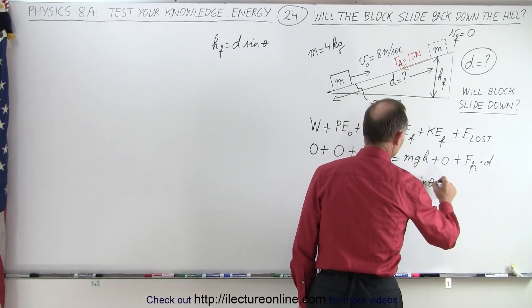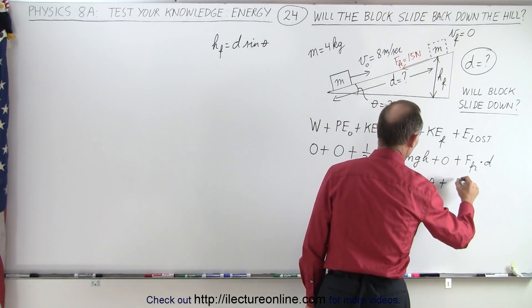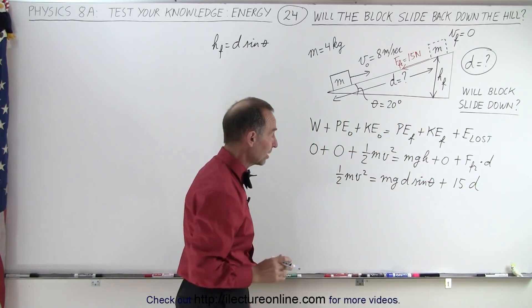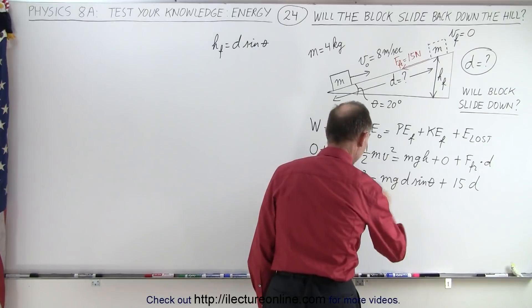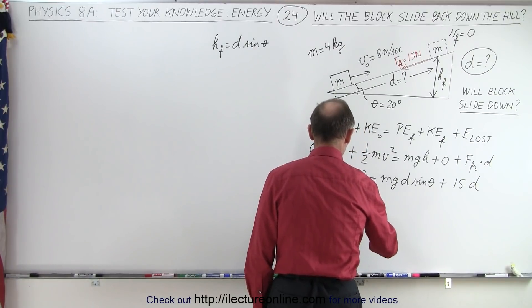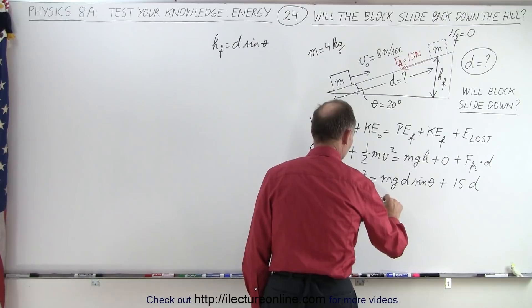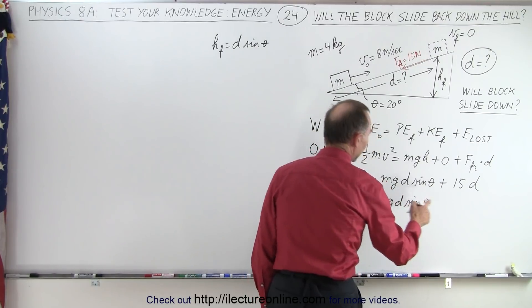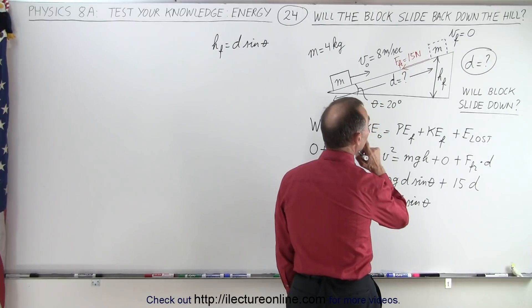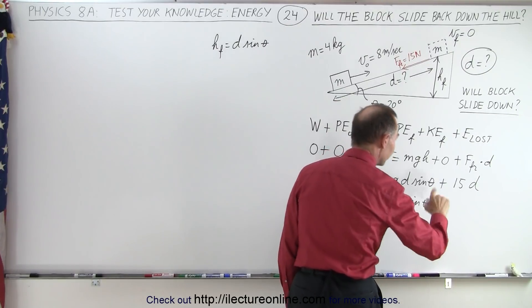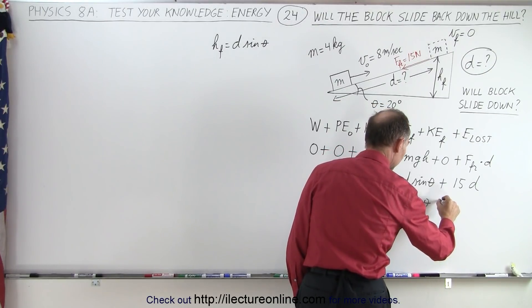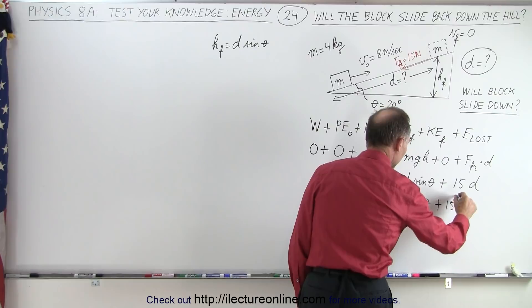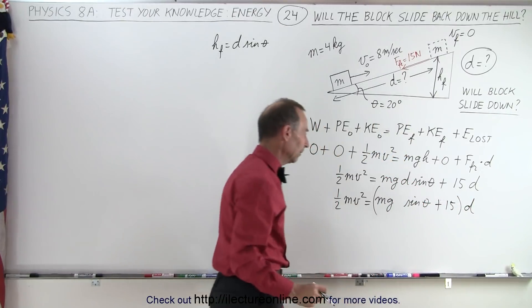d sine theta plus the friction force which is 15 times d, and then we can factor out a d and solve for d. So here we have one-half mv squared equals mgd sine theta, and the friction force would be plus 15 times d. What I wanted to do is factor out the d, so plus 15 and the d is factored out. That's better.